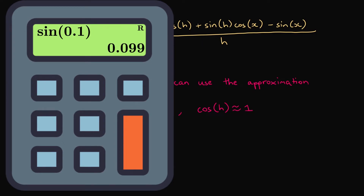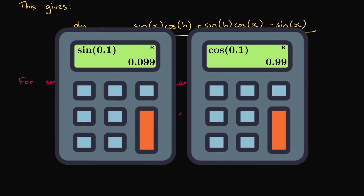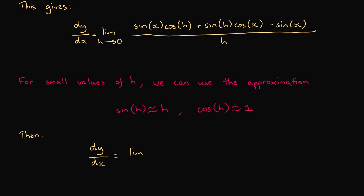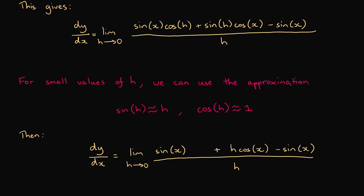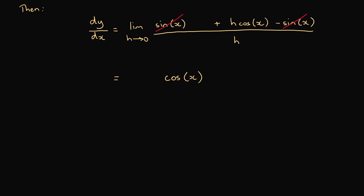Applying the approximations, dy/dx equals the limit as h approaches 0 of [sine x times 1 plus h cosine x minus sine x] all over h. Multiplying by 1 just gives itself, and sine x cancels with minus sine x. This gives the limit as h tends to 0 of h cosine x over h. The h cancels, leaving the limit as h approaches 0 of cos x. Since there are no h's remaining, we remove the limit operator, giving us cos x. So dy/dx equals cos x when y equals sin x.